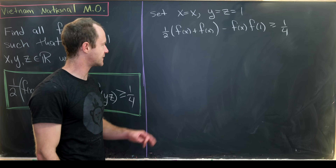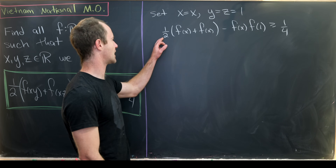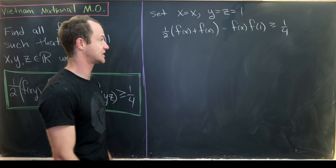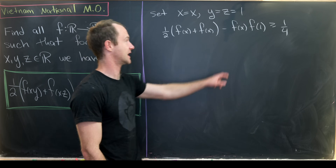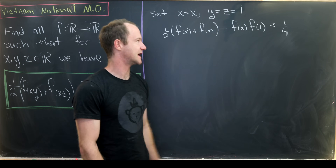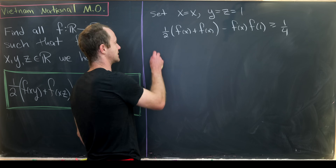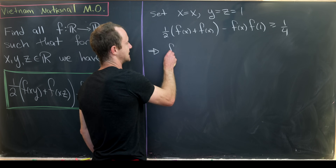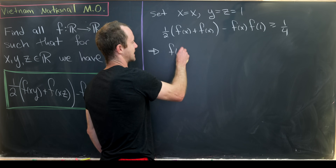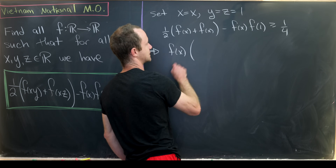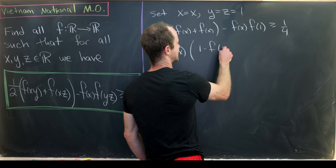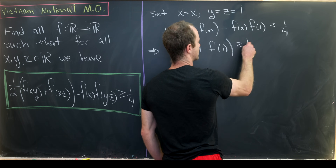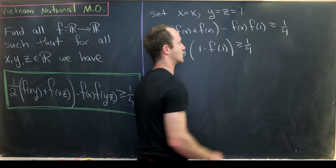Notice we've got one-half of something plus itself, so that turns into f(x). We can factor out f(x), giving us f(x)·(1 − f(1)) ≥ 1/4.